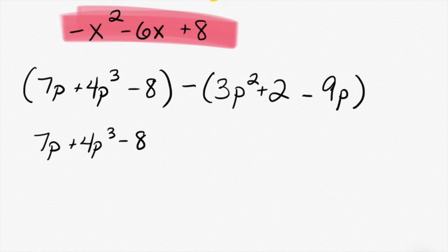So, I'm subtracting that whole second set of parentheses, which means it's going to be negative three P to the second power. Minus two. Plus nine P. Very good. Plus nine P. Someone who is not Peyton or Emily, explain why is it plus nine P. Or plus nine, sorry.